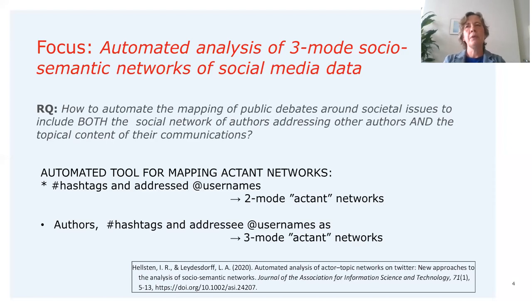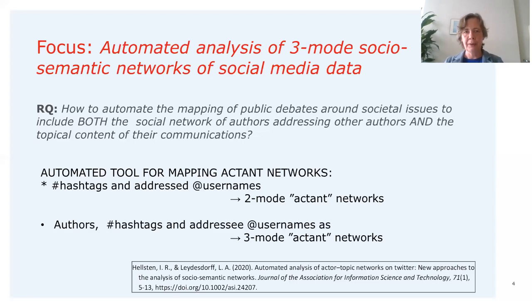Basically what we did is extract from the Twitter data — from the tweets — the hashtags and the addressed usernames. Social actors can address others on Twitter using the @username construction. We can automatically extract hashtags and usernames from the tweets, and in that sense it results in so-called two-mode actant networks.